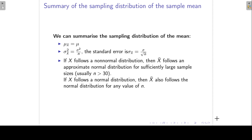If the population follows a non-normal distribution, then x-bar follows an approximate normal distribution, especially as the sample size n becomes large. And if x follows a normal distribution, then x-bar, the sample mean, also follows the normal distribution for any value of n.